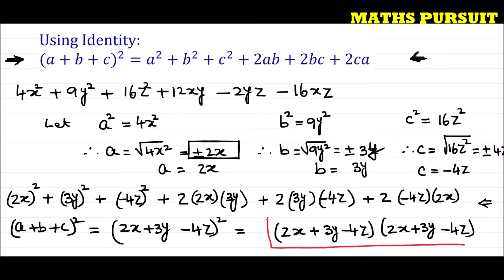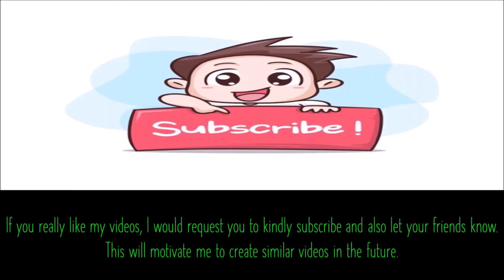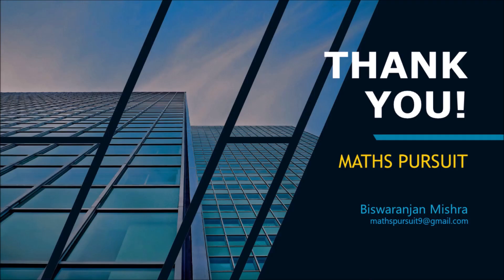Hope you understood this. It is very simple and straightforward — we just need to apply the identity (a + b + c)². If you have any questions or doubts, please reach out in the comment section and I will get back to you. If you like my videos, please subscribe and let your friends know — it motivates me to create more videos.